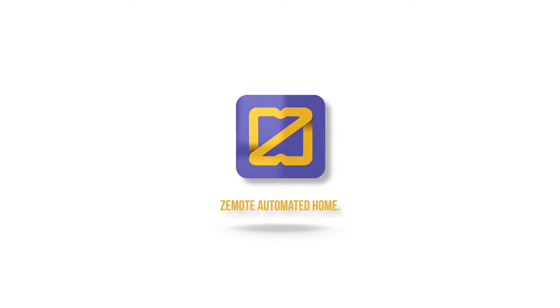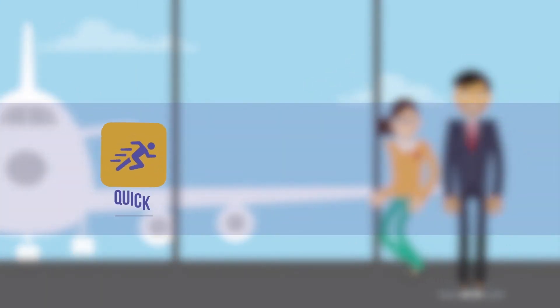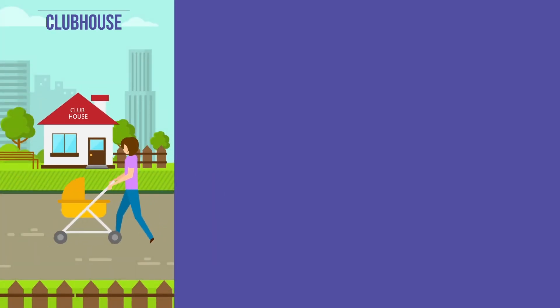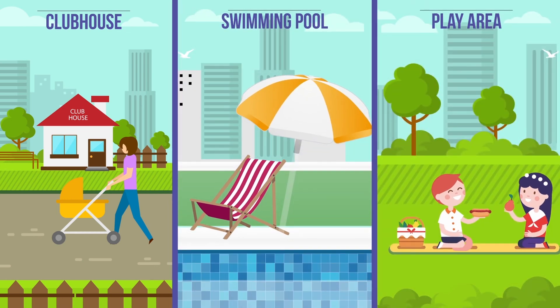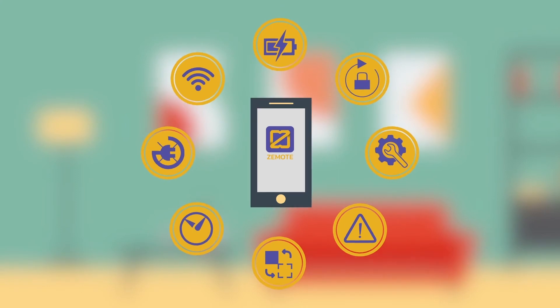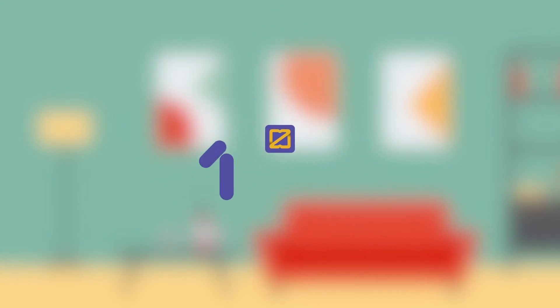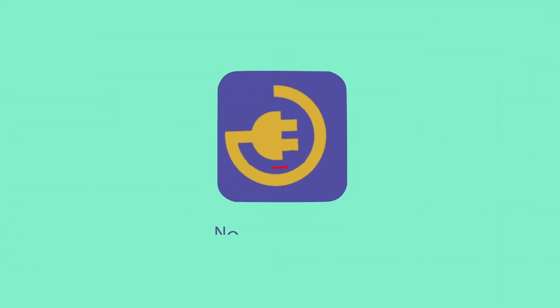These days everyone wants to make their life quick, easier, and luxurious. All properties today have a clubhouse, a swimming pool, and a play area for the children, but what they don't have is a completely automated home. What if you offer Zemote automated homes to your customers and add some extra magic to the homes you build?